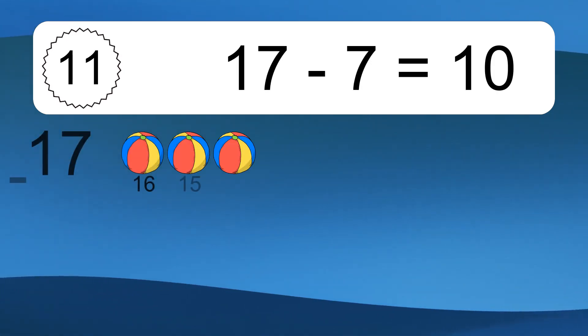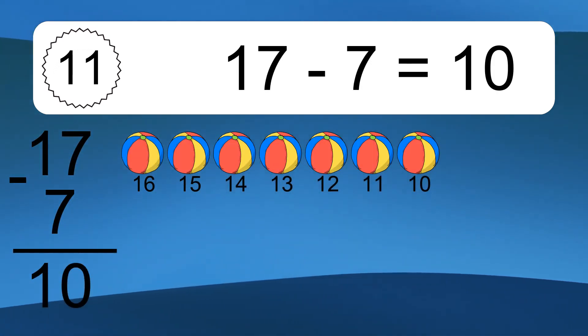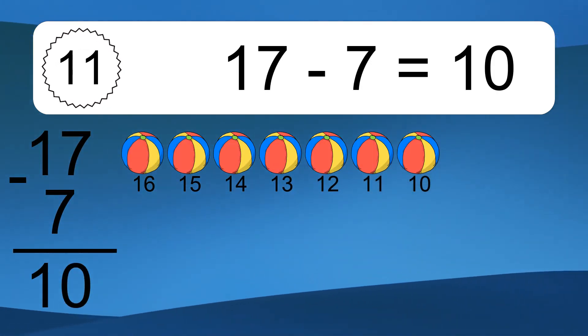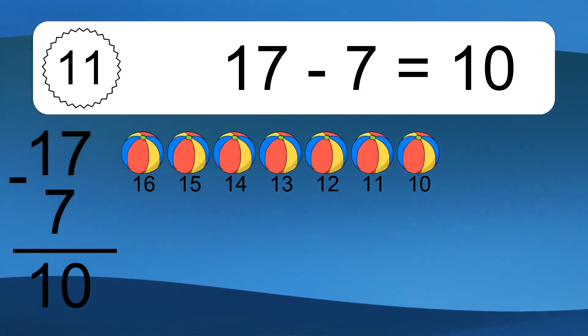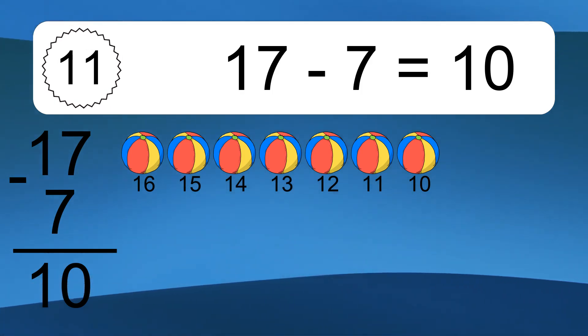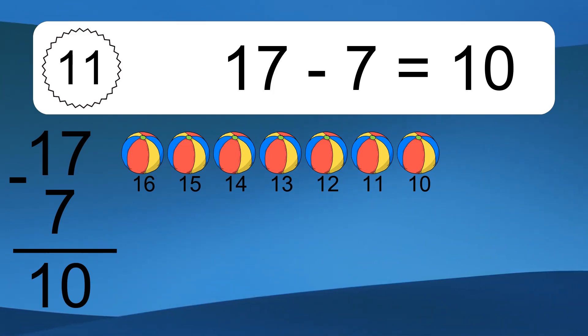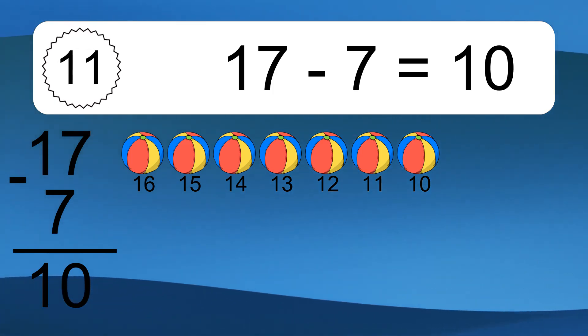17 minus 7 equals what? 17 minus 7 equals 10. Let's count it. 16, 15, 14, 13, 12, 11, 10.